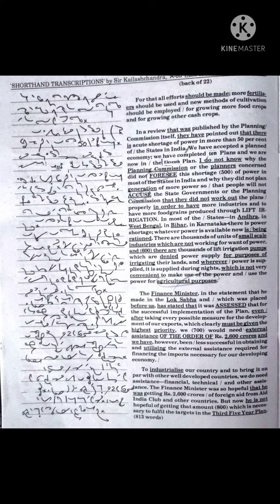In most of the states in Andhra, in West Bengal, in Bihar, in Karnataka, there is power shortage. Whatever power is available now is being rationed. There are thousands of units of small-scale industries which are not working for want of power, and there are thousands of lift irrigation pumps which are denied power supply for purposes of irrigating their lands. And wherever power is supplied, it is supplied during nights which is not very convenient to make use of the power for agricultural purposes.